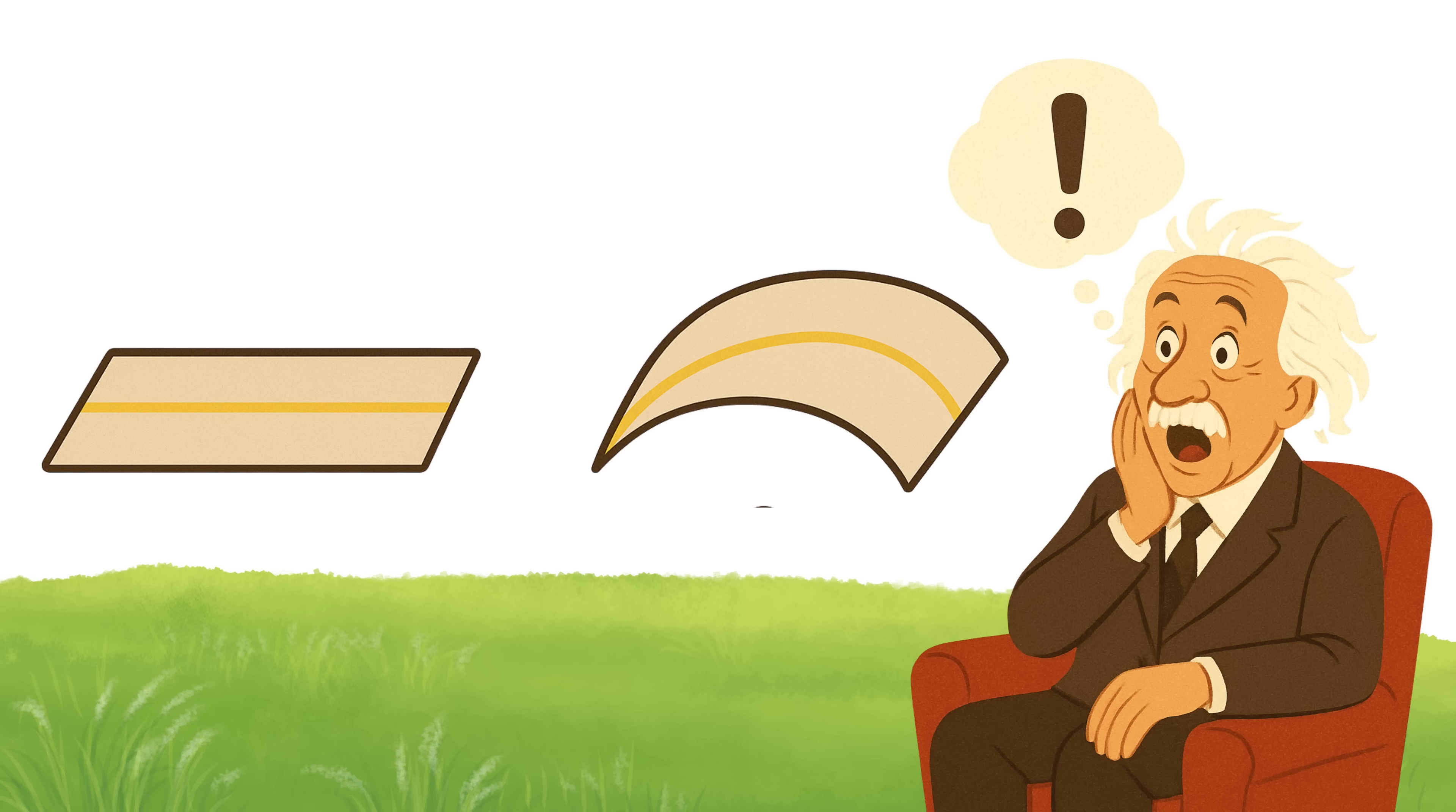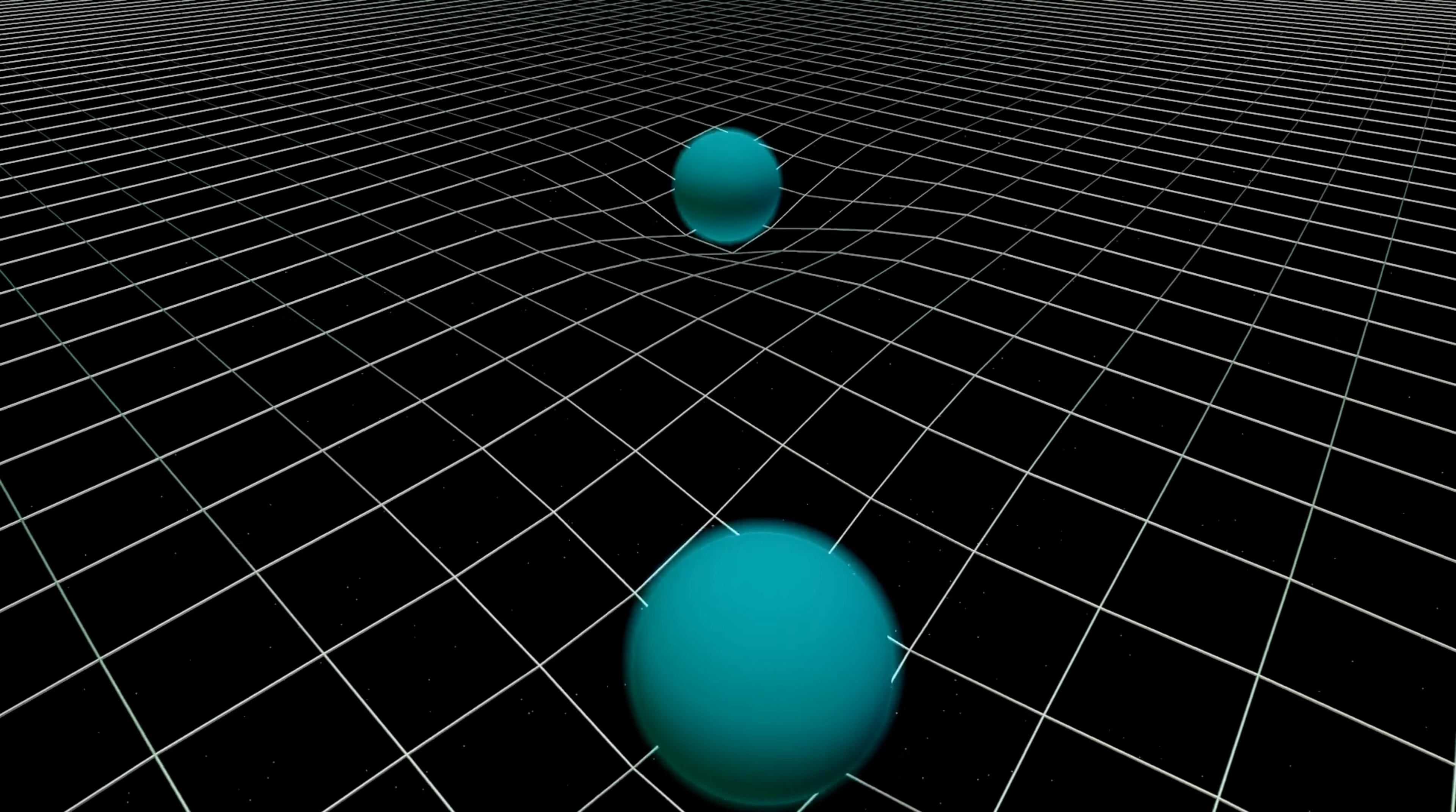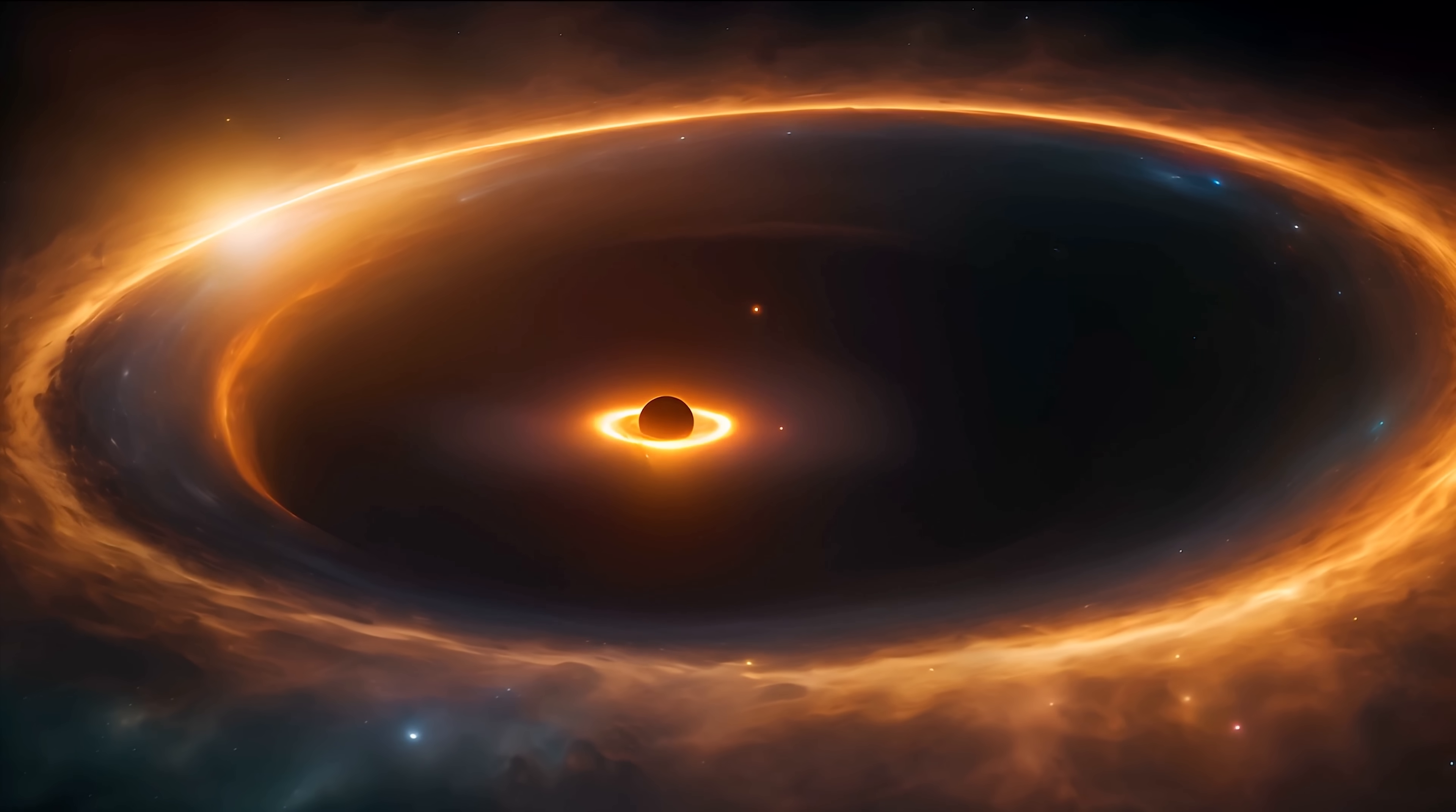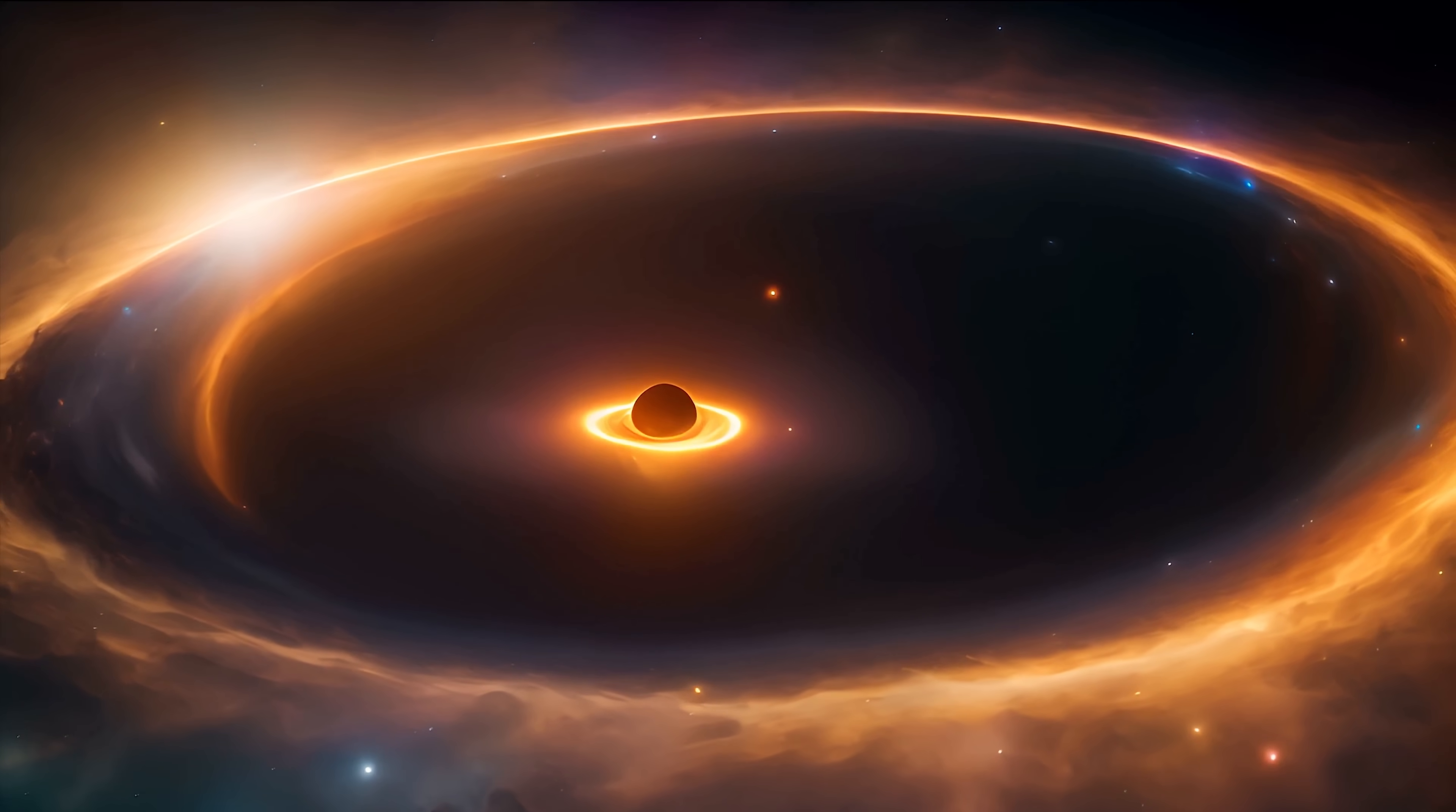So if space was curved, then the path of light, which always tries to go straight, would appear bent to someone like us, living inside that curved space. And that was another breakthrough. The big one. Einstein realized that maybe gravity isn't a mysterious invisible force pulling things down, like Newton had said. Maybe what we call gravity is just the result of mass bending the fabric of space and time.